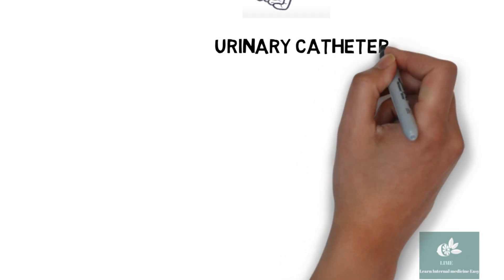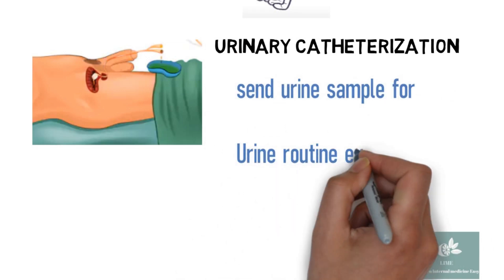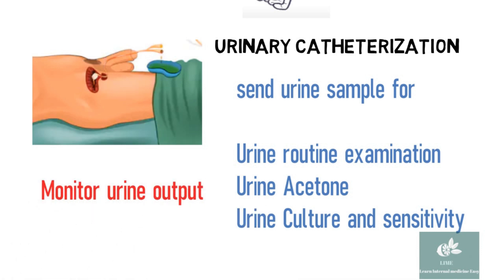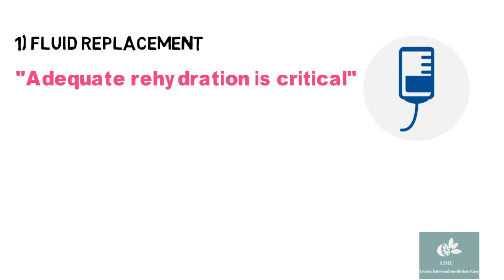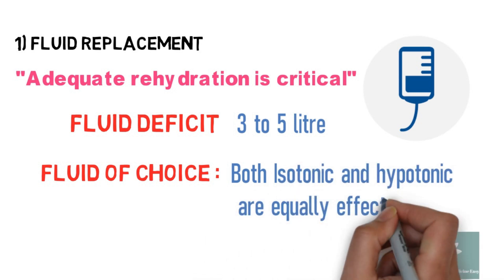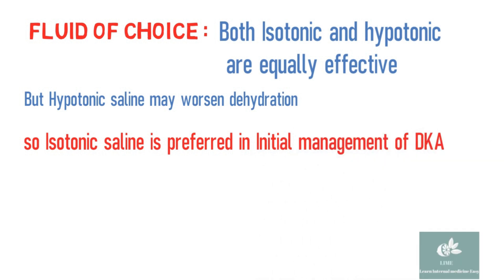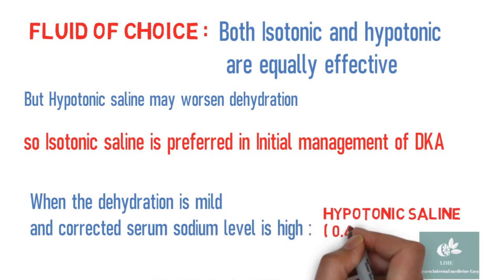Catheterize the patient to monitor urine output, and send urine samples for routine examination, urine acetone, and culture sensitivity. Fluid resuscitation is the critical part of treating DKA. Adequate rehydration is necessary to produce optimal response to subsequent low-dose insulin therapy. In patients with DKA, the fluid deficit is around 3 to 5 liters. Isotonic normal saline is the fluid of choice. When the dehydration is mild and corrected sodium level is very high, we can prefer hypotonic solution, i.e., half normal saline.